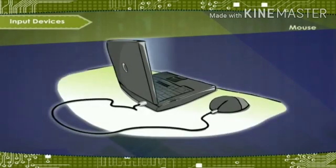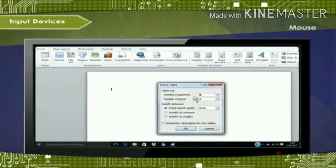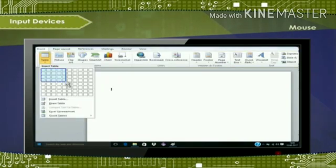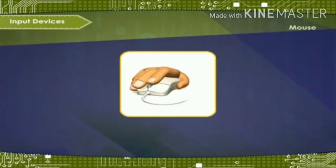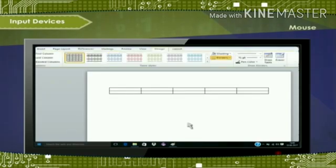Mouse is a pointing device which is used to control the movement of the cursor on the screen. It is also used for selecting and opening programs, files and folders, making drawings and for various other purposes. When we scroll the mouse on the mouse pad, the cursor moves on the screen along with its movement. The terms click, drag and drop describe the actions of the mouse.